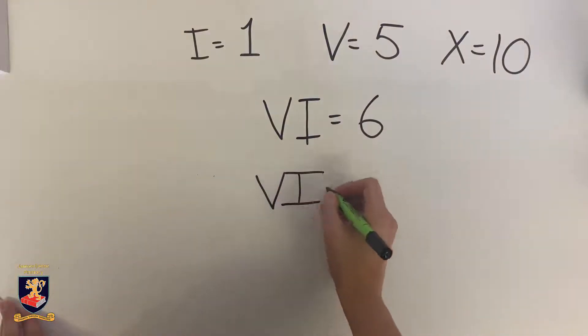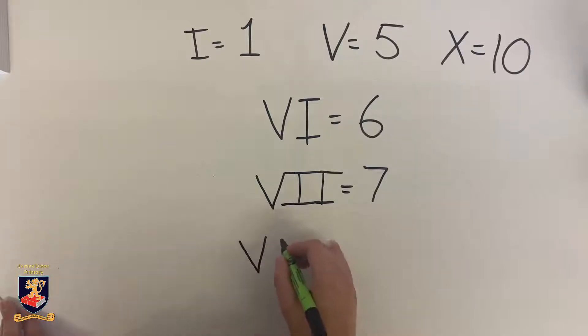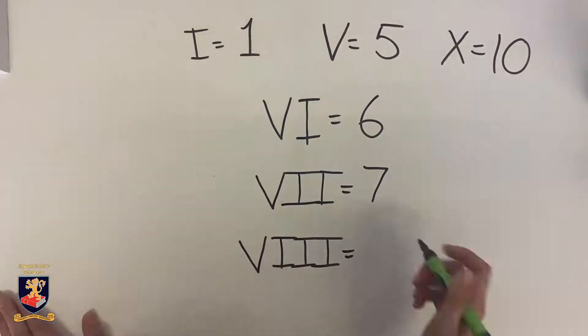Seven is two more than five, and eight is three more than five.